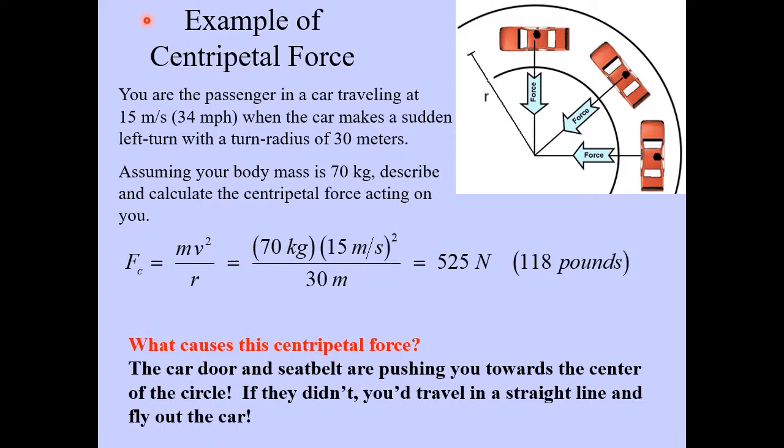Here's another example of a centripetal force that you're certainly familiar with but you may not have thought much about it until now. You're the passenger in a car traveling at 15 meters per second which by the way is about 34 miles per hour when the car makes a sudden left turn with a turn radius of 30 meters. So here's the picture. Remember the driver's over here so you're the passenger sitting here on the right side of the car and we're going to see this car make this left turn and the radius here of this turn is 30 meters.